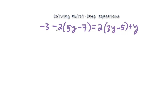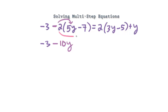The first thing I want to do is get rid of the parentheses — PEMDAS always comes into play. Let's bring the negative 3 down. We have negative 2 times positive 5y — you always take the sign to the left of the number — so negative 2 times 5y gives us negative 10y. Then negative 2 times negative 7 gives us positive 14. The parentheses are no longer there.